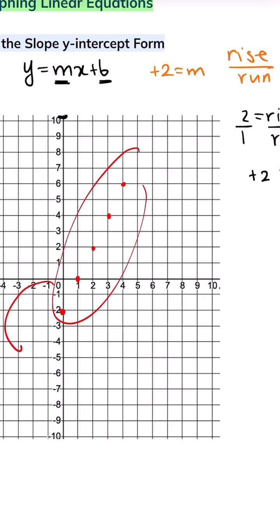What about this side of the line? You do the exact opposite. You go 2 units down and 1 unit left, 2 units down and 1 unit left.